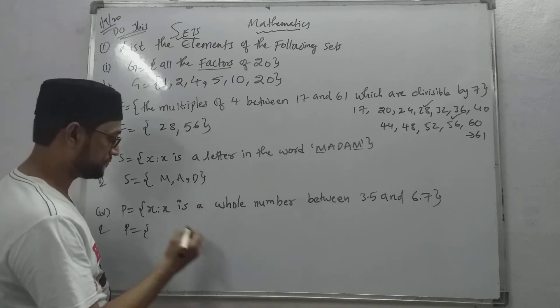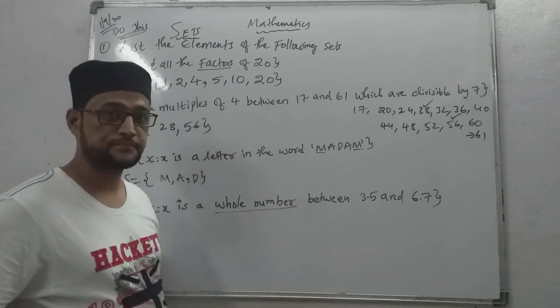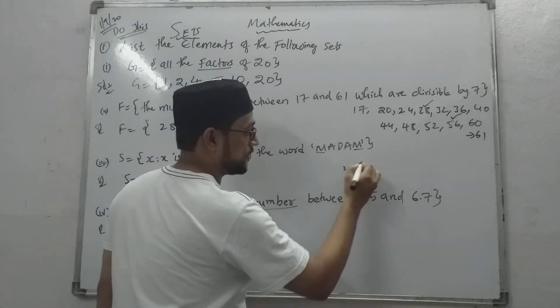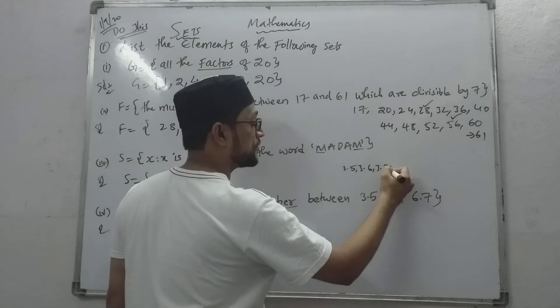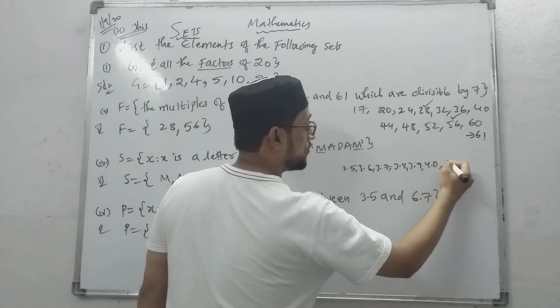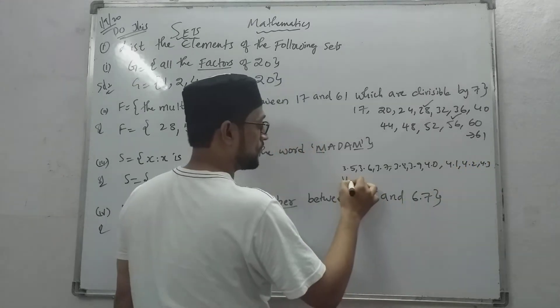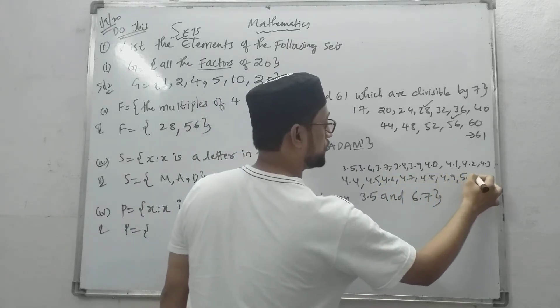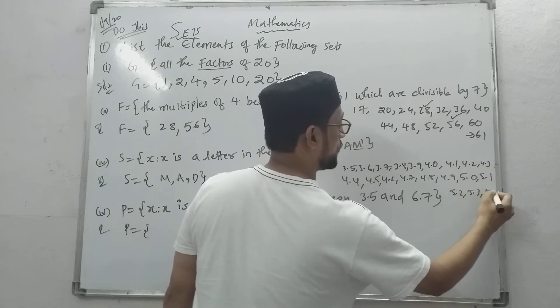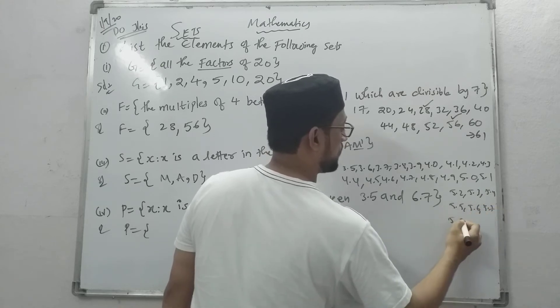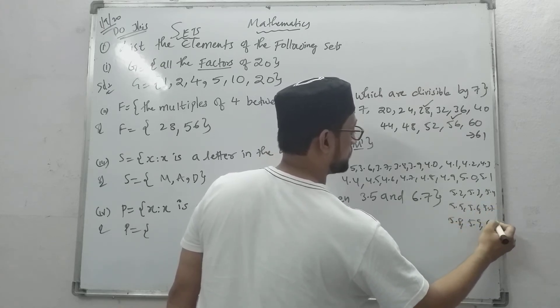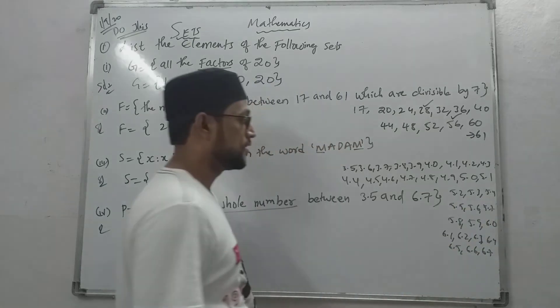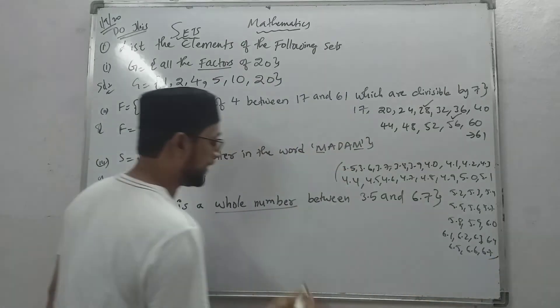Now next one, set P. See here - we have to choose only the whole number in between these two decimal numbers. How we can? If we start from 3.5, 3.6, 3.7, 3.8, 3.9, 4.0, 4.1, 4.2, 4.3, 4.4, 4.5, 4.6, 4.7, 4.8, 4.9, 5.0, 5.1, 5.2, 5.3, 5.4, 5.5, 5.6, 5.7, 5.8, 5.9, 6.0, 6.1, 6.2, 6.3, 6.4, 6.5, 6.6, 6.7. Now in between these numbers, we have to select only whole numbers.